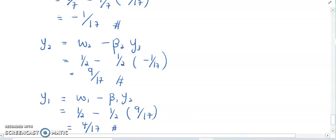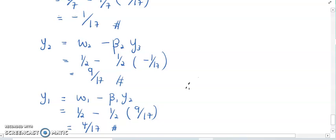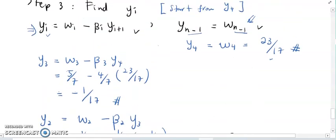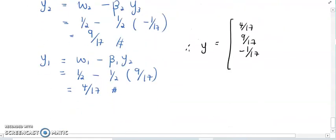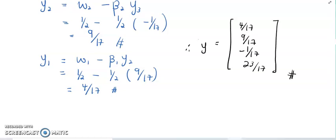So our final solution: Y_1 is 4 over 17, Y_2 is 9 over 17, Y_3 is negative 1 over 17, and Y_4 is 23 over 17. That's it for Thomas' algorithm. Please note that to use Thomas' algorithm, your system must be a tridiagonal system.